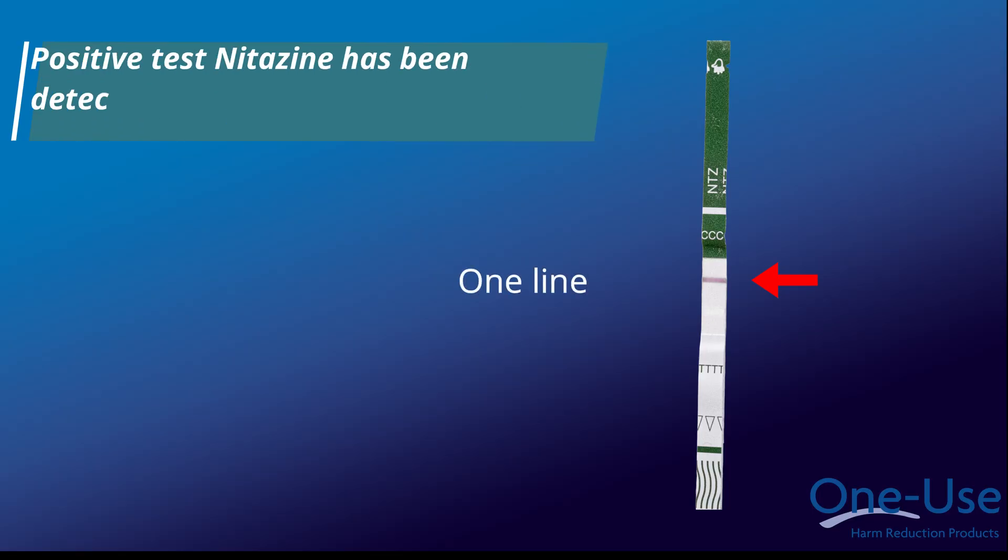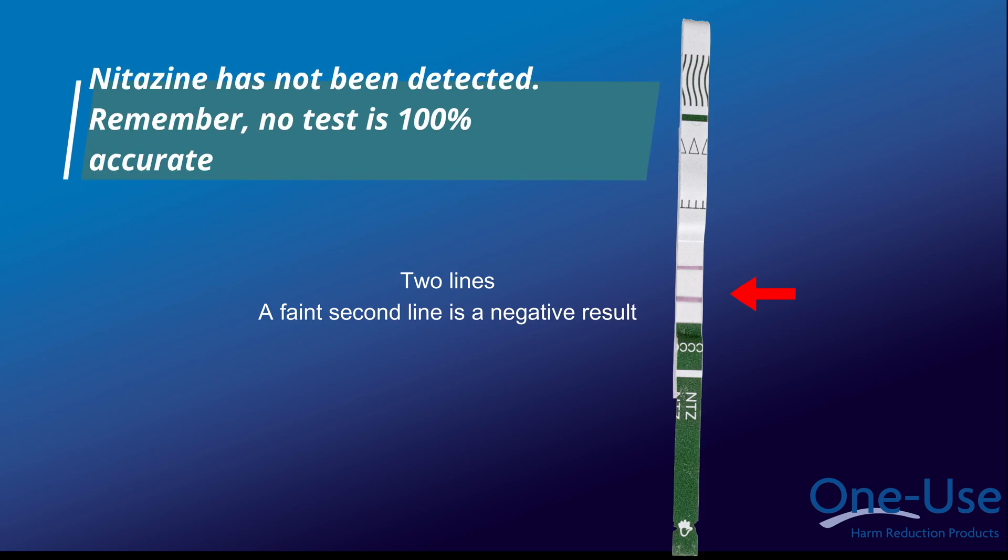This is an example of a positive test as the strip is showing one line. This means that nitazine has been detected. This is an example of a negative test. This means that nitazine has not been detected.